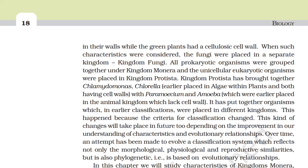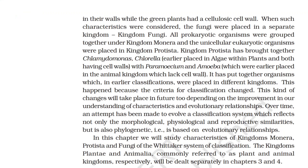All prokaryotic organisms were grouped under Kingdom Monera and unicellular eukaryotic organisms were placed in Kingdom Protista. Kingdom Protista brought together Chlamydomonas and Chlorella, earlier placed in algae within plants, with Paramecium and Amoeba, which were earlier placed in the animal kingdom. This happened because the criteria for classification changed.